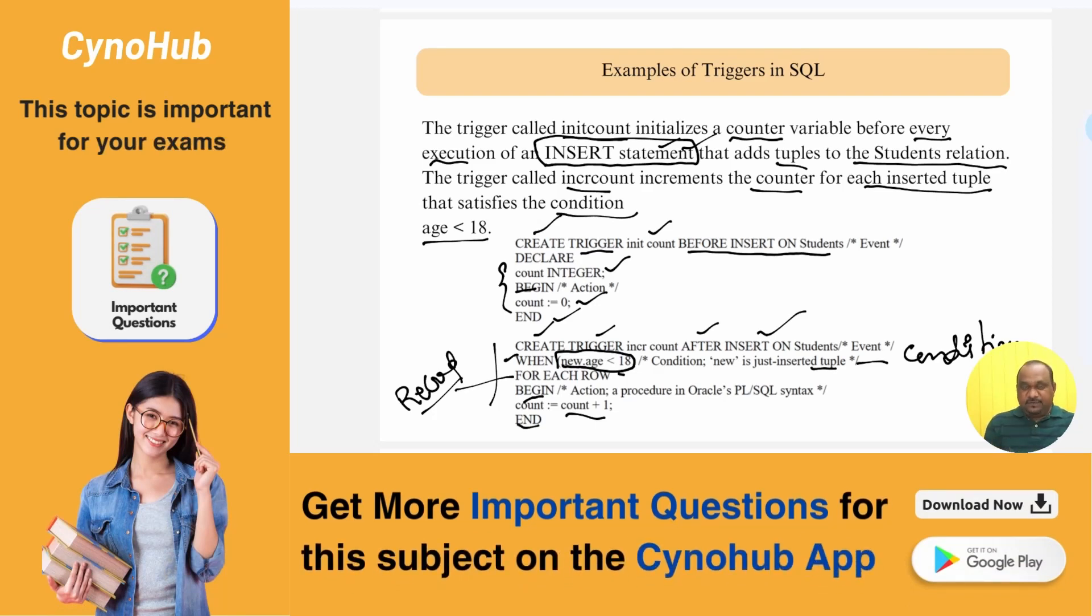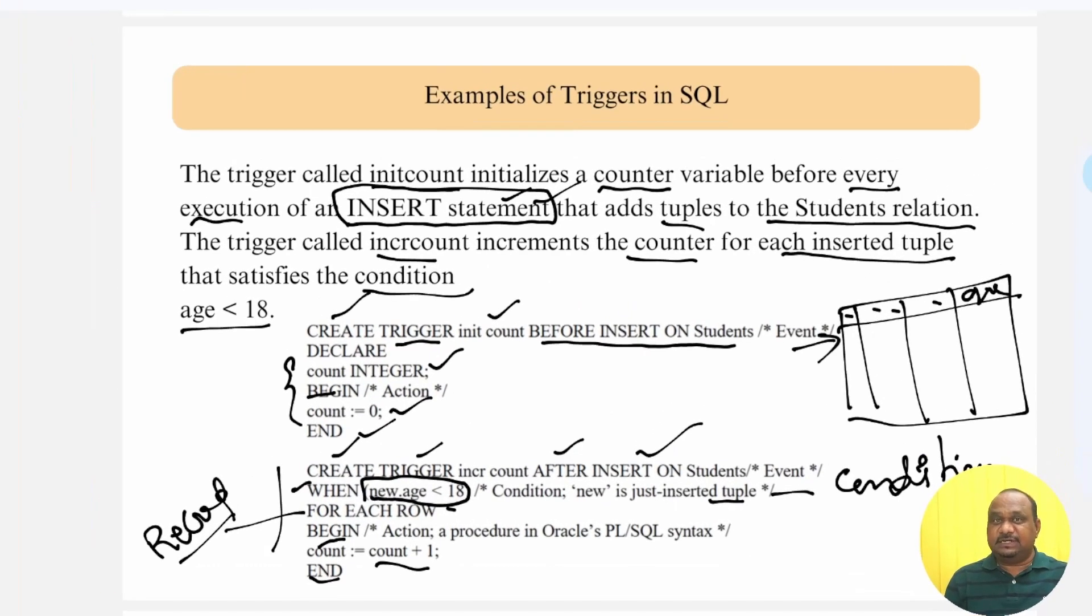Entirely what is happening here is when there is a database, there are some fields, there is an age field also available. Before inserting the next row, execute this procedure called a trigger. When the age is less than 18, then only insert the record, otherwise, do not insert the record. That is the action part in the example of triggers.